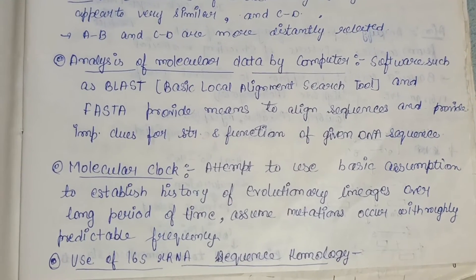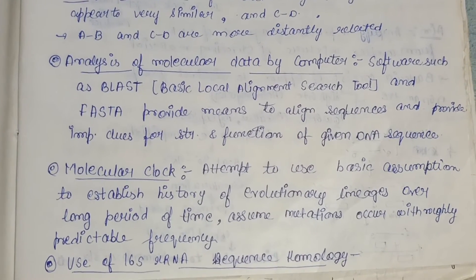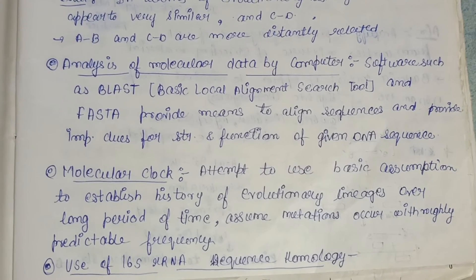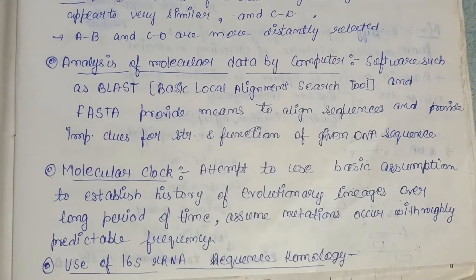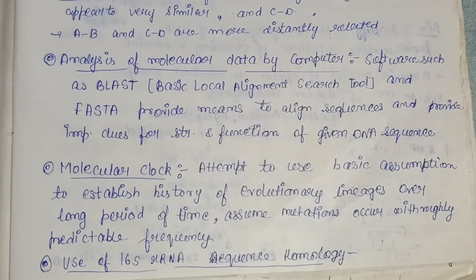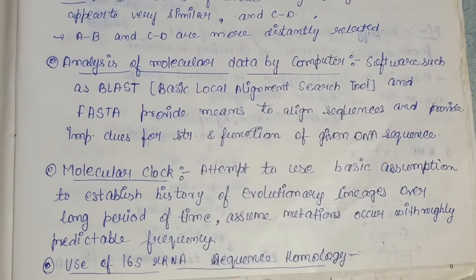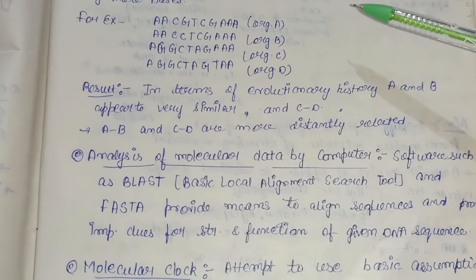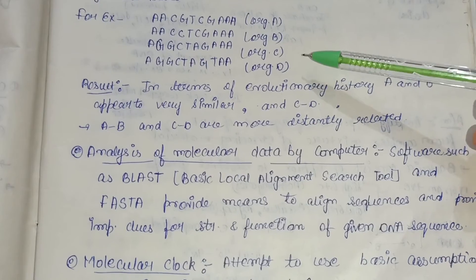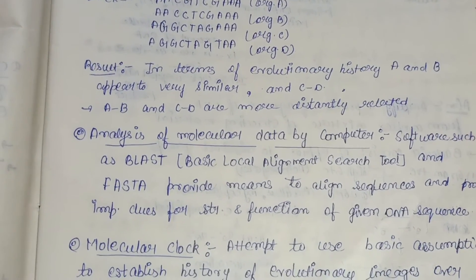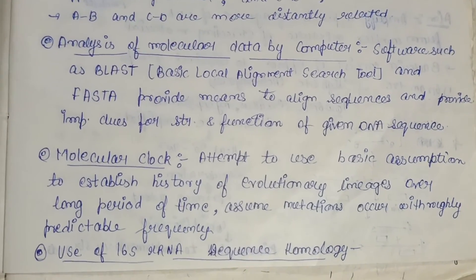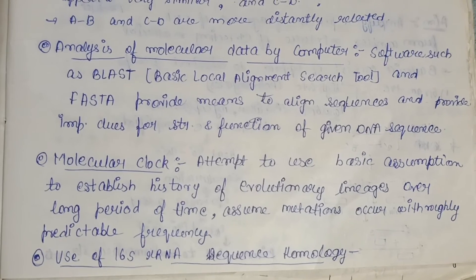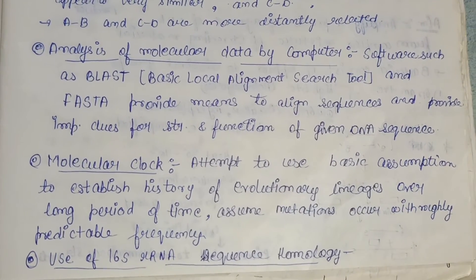For analysis of molecular data, software such as BLAST — Basic Local Alignment Search Tool — and FASTA provide the means to align sequences and provide important clues for the structure and function of a given DNA sequence. The sequences shown in the earlier example are analyzed using software like BLAST and FASTA.